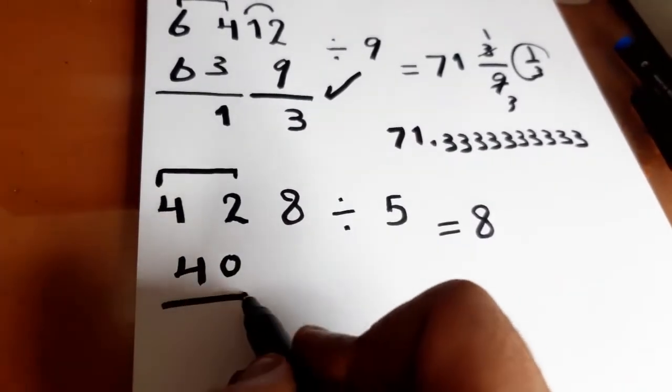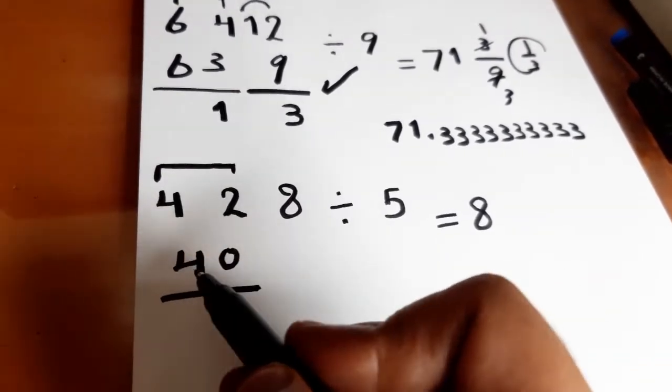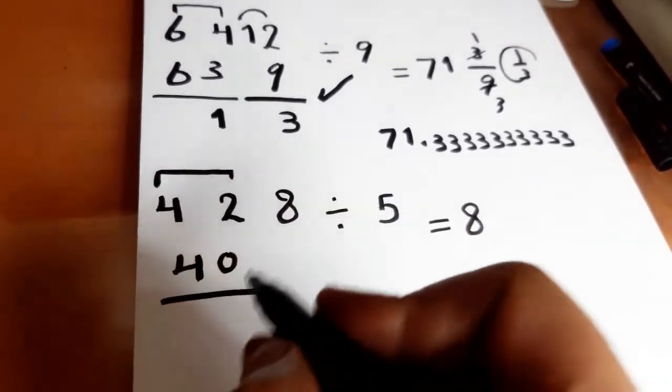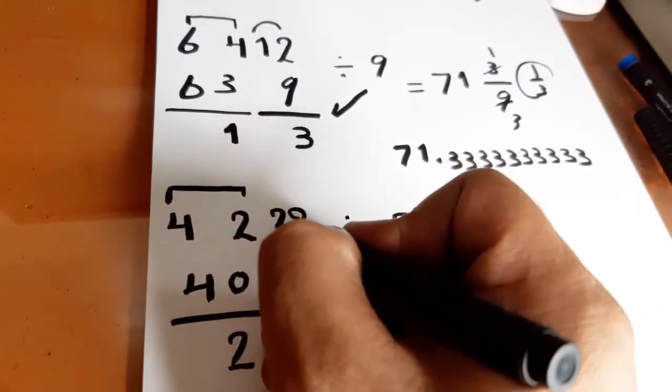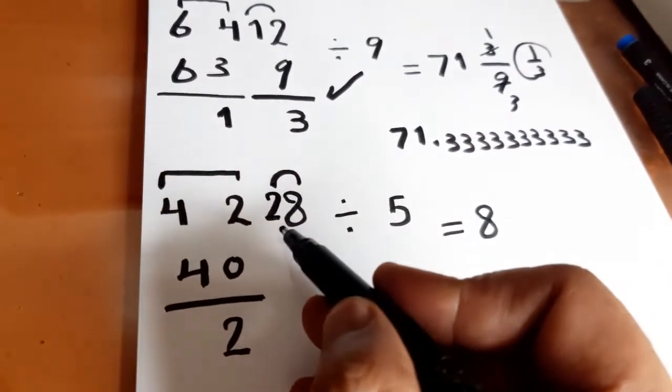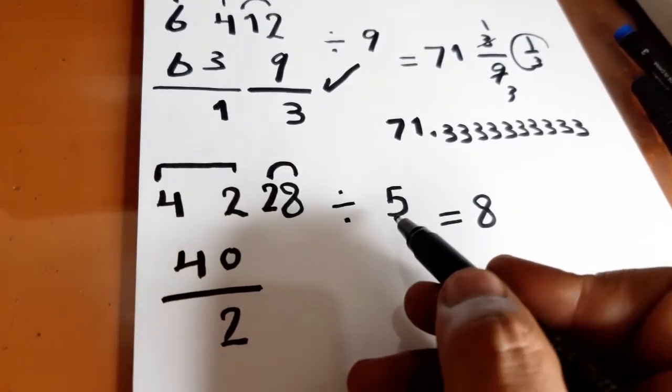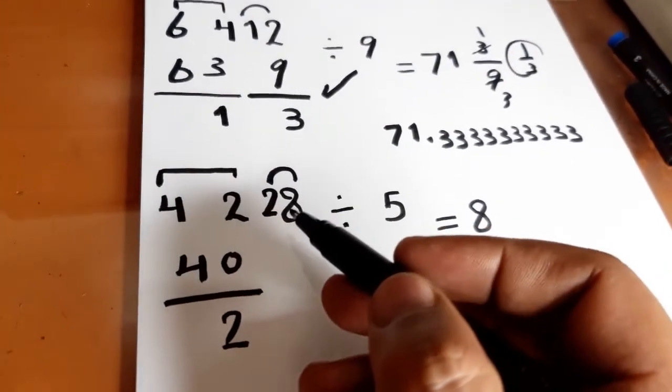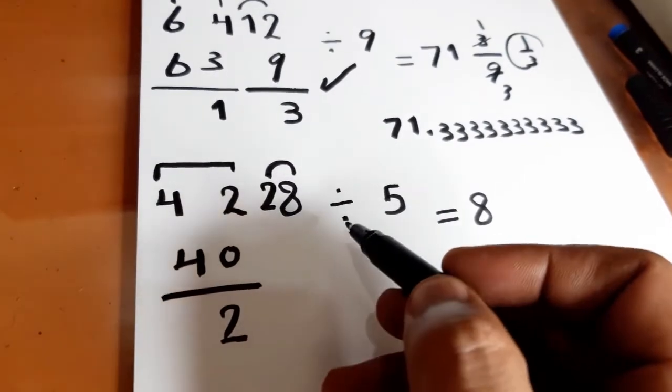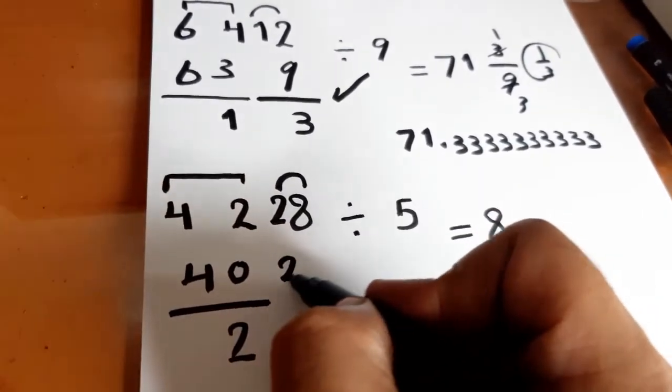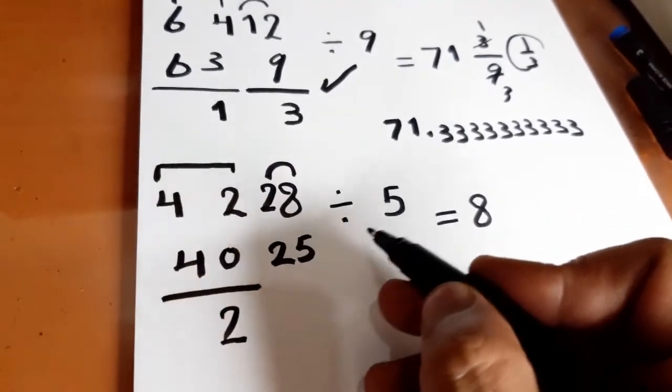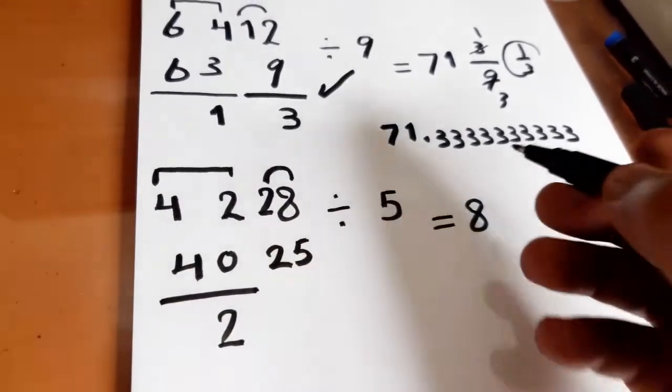Now we will find the difference between 42 and 40. The difference between 42 and 40 is 2. We will take 2 and write it here beside 8. We have now a new number, 28 divided by 5. But unfortunately 28 isn't divisible by 5, so 28 will be reduced to 25. 25 divided by 5 equals 5.